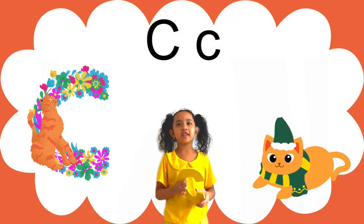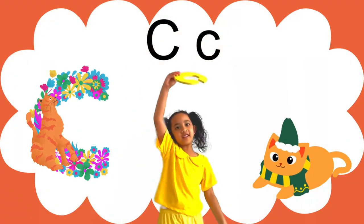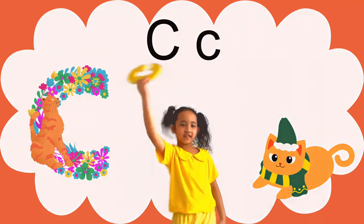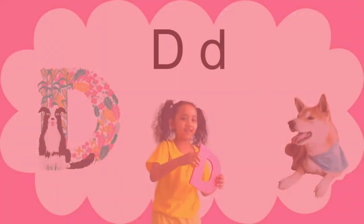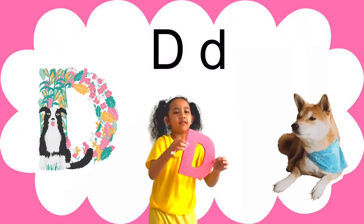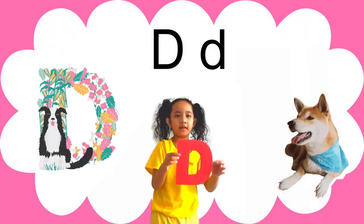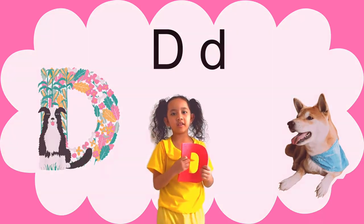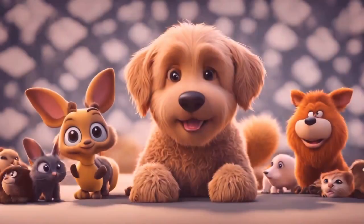C is for cat, purring by the fire. D is for dog, always happy, wagging his tail higher.